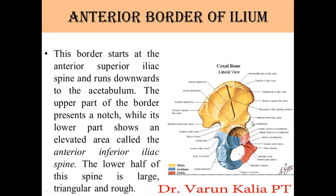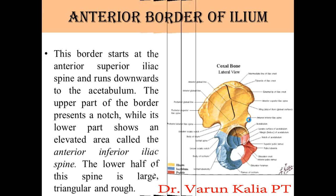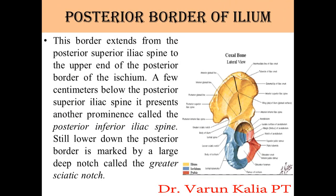The lower half of this spine is large, triangular, and rough. The posterior border extends from the PSIS (posterior superior iliac spine) to the upper end of the posterior border of the ischium.